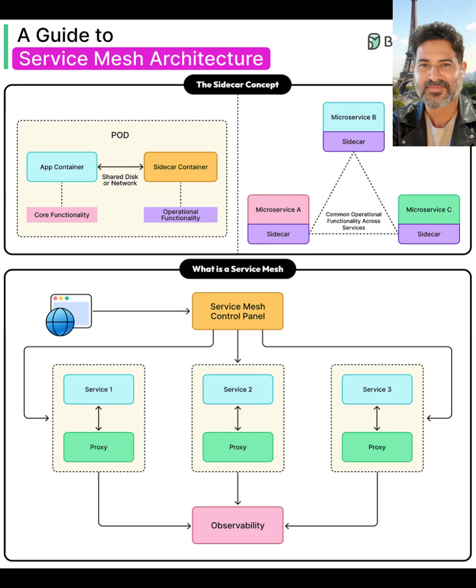Because all traffic flows through these proxies, the mesh can automatically emit metrics, logs, and traces into a unified observability pipeline without developers adding custom instrumentation. This leads to more reliable microservices with consistent security, easier debugging, safer deployments via canary and traffic shaping, and a cleaner separation between application code and operations concerns — ideal for scaling modern cloud-native architectures.